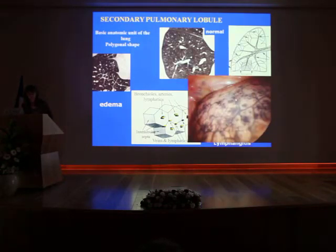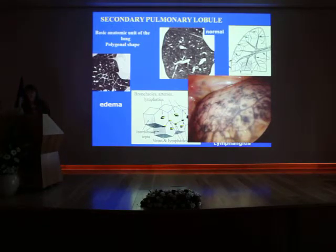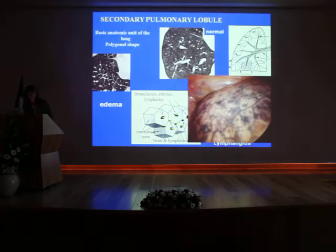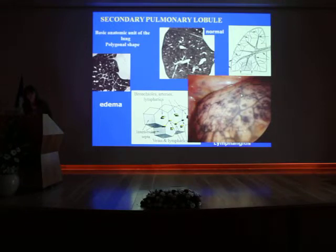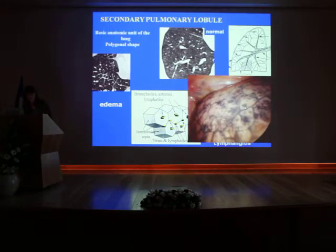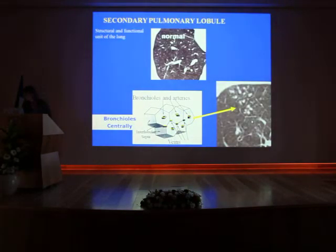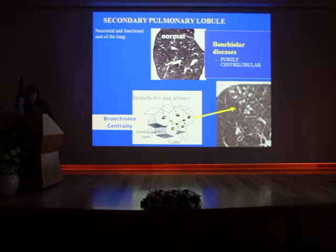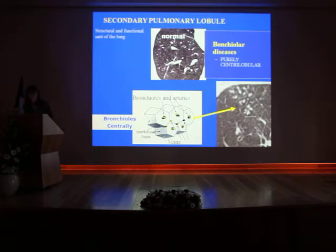This is a video thoracoscopy performed in a smoker, and what you see here is the presence of anthracotic pigments in the lymphatics drawing the shape of the secondary pulmonary lobule. You can see also some pigments at the center of the lobule. The bronchioles are at the center of the secondary pulmonary lobule, and this explains why bronchiolar diseases are purely centrilobular — you will find nodules located at the center of the secondary pulmonary lobule.